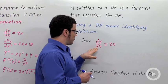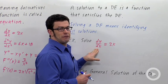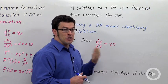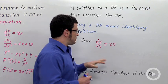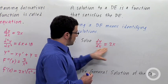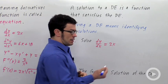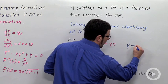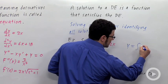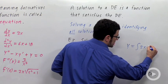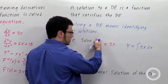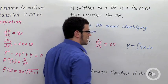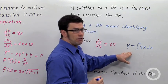Whenever you have information about a function's derivative, you can get information about the function by anti-differentiating. If we're told the derivative is 2x, then the function itself, y, is the integral of 2x dx. If the derivative was with respect to x, we would integrate with respect to x.